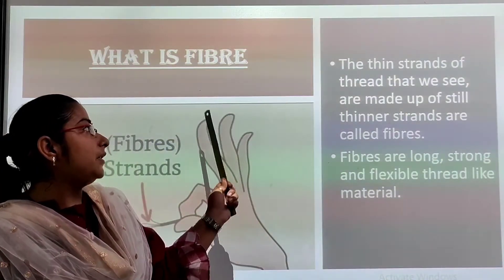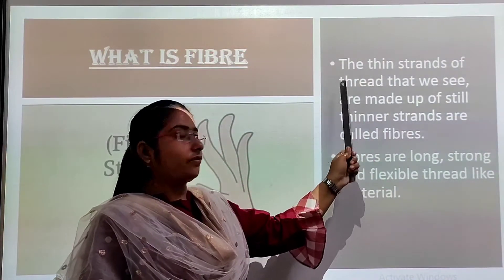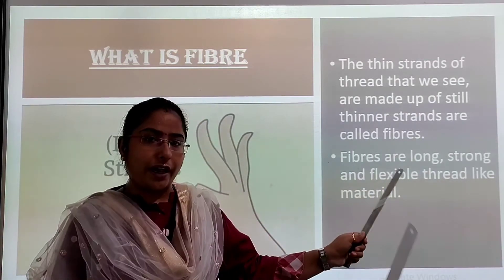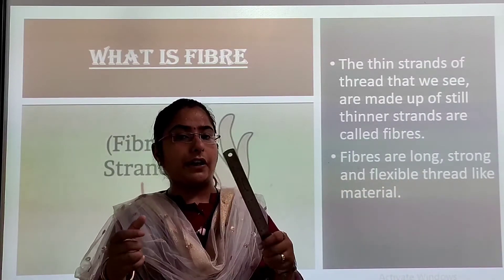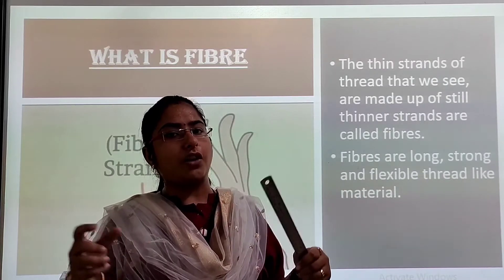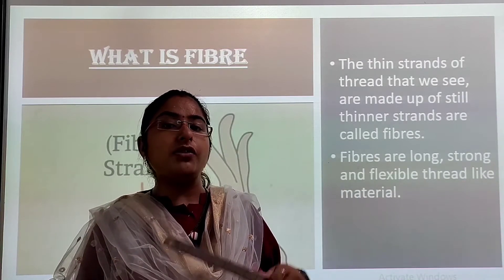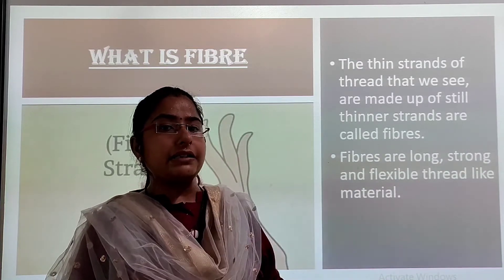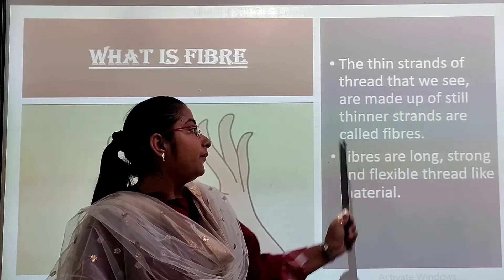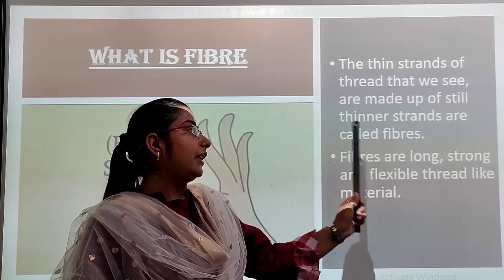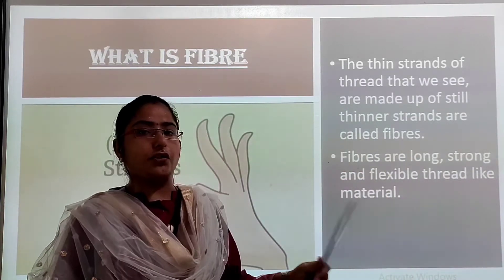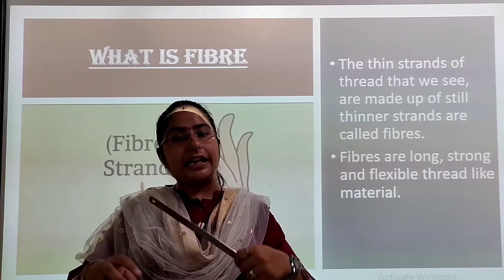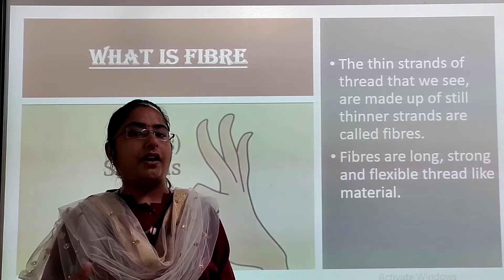So what are fibers? The thin strands of thread that we see are made up of still thinner strands called fibers. Those thin strands are known as fibers. Fibers are long, strong, and flexible thread-like materials. They can easily twist to make a yarn.